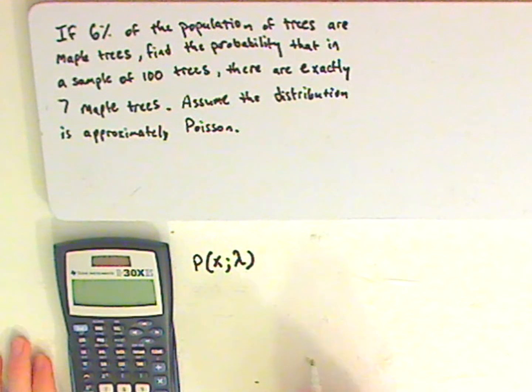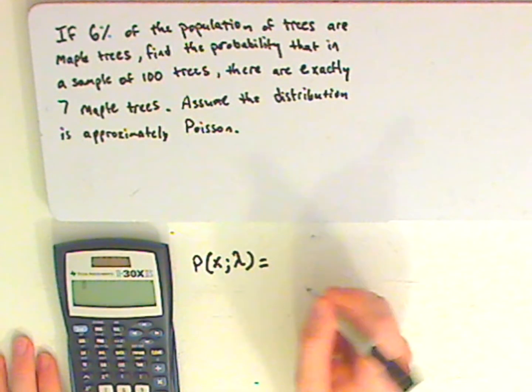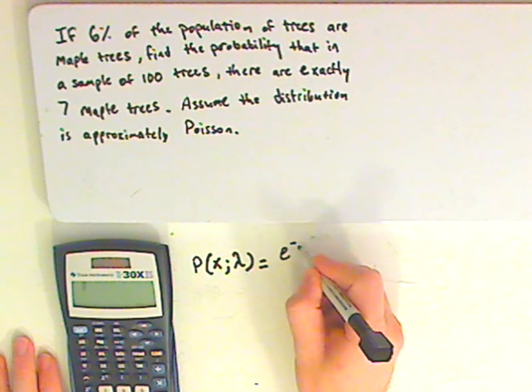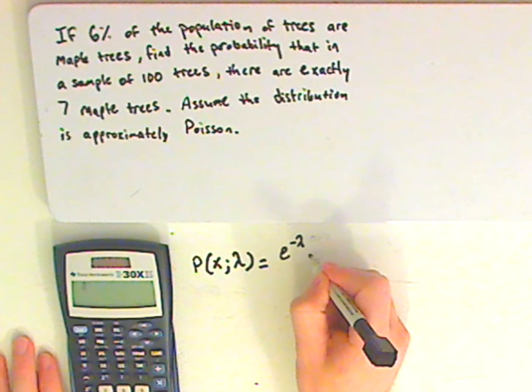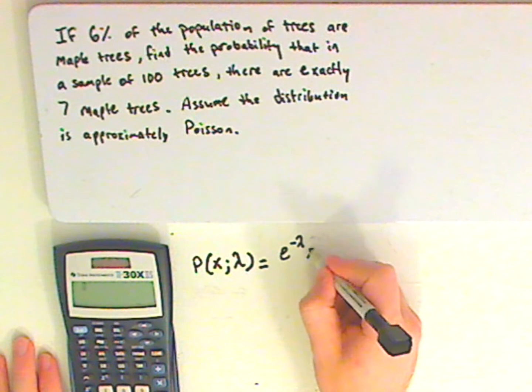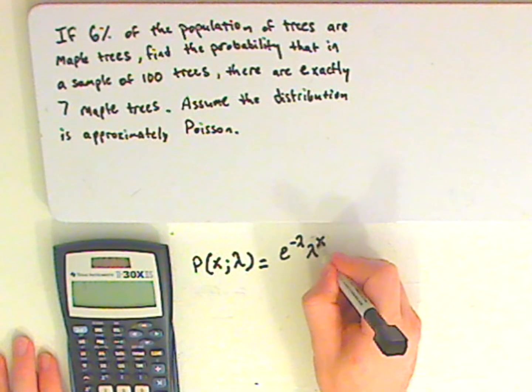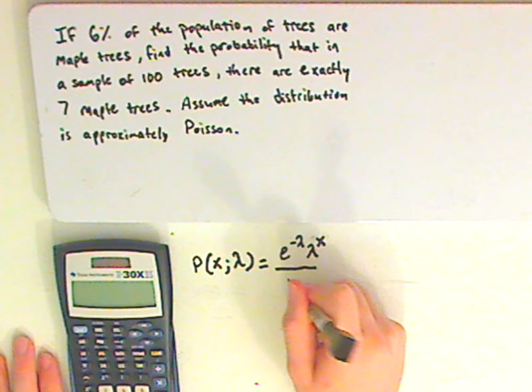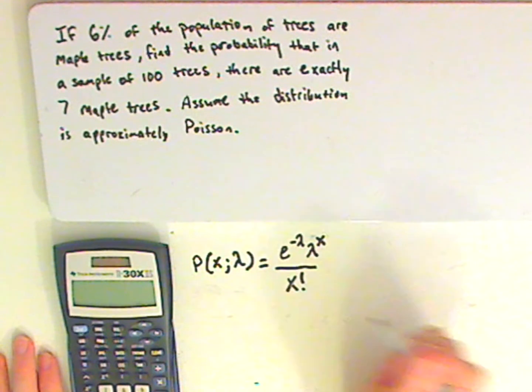In this case, it's exactly 7. And the formula is this: E, which is natural base, raised to negative lambda times lambda raised to your X over X factorial.